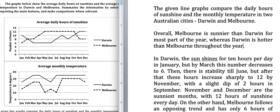Now we come to the overview. The overview starts with the word 'overall.' Overall, Melbourne is sunnier than Darwin for most part of the year, whereas Darwin is hotter than Melbourne throughout the year. The dashed line is for Melbourne and it is sunnier than Darwin for most part of the year — only one month here and two months there it is not. The solid line is for Darwin and it is hotter than Melbourne throughout. This one sentence gives the gist of both line graphs, so this is a very good overview sentence. I will not write a lengthy overview here because I need to condense all the information.